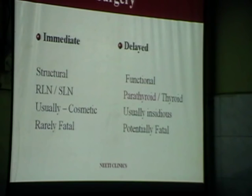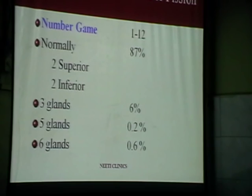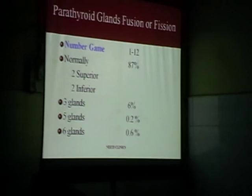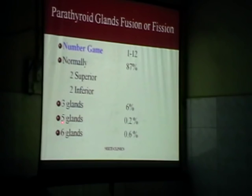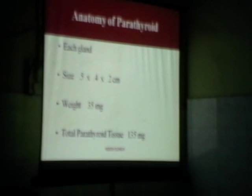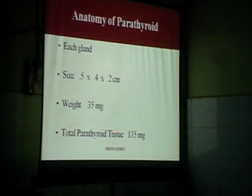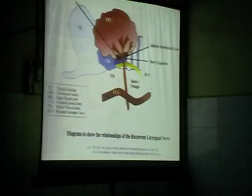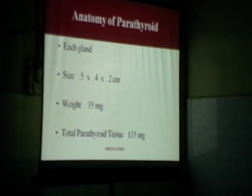There can be anything between one and twelve parathyroid glands, but normally 87 percent have two upper and two lower. Superior glands are sometimes three; six percent have five glands and 0.2 percent have six glands. Each gland is very small - 0.5 by 0.4 by 0.2 centimeters, or 5mm by 4mm by 2mm. It only weighs 35 milligrams, and the total parathyroid tissue in an adult individual is 135 milligrams. So it's not a big gland or big tissue we are talking about.